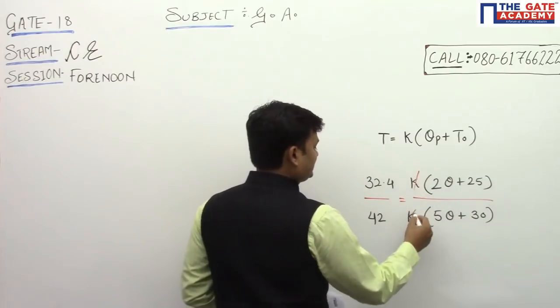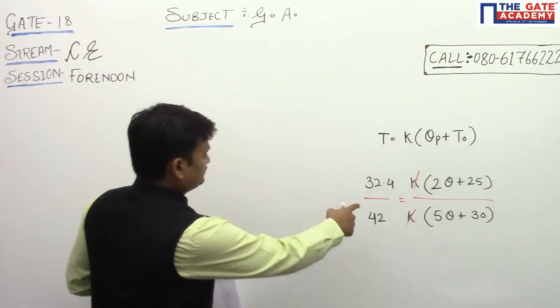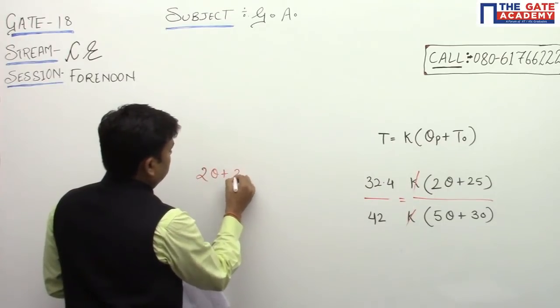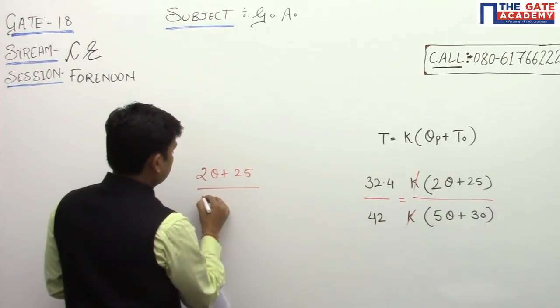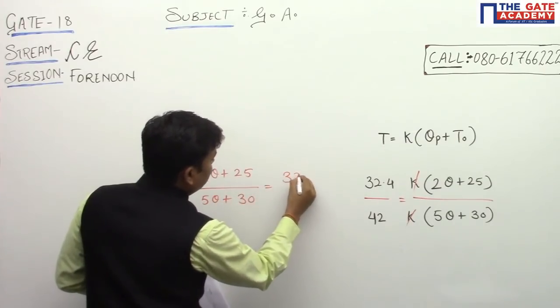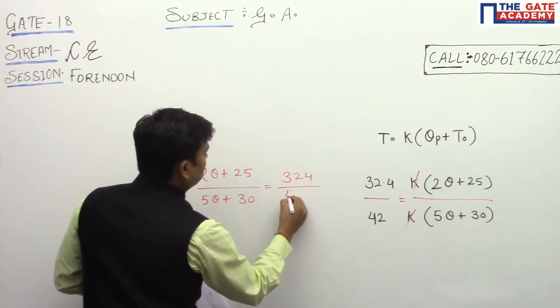So in this case, K and K will get cancelled, and also this side will cancel.